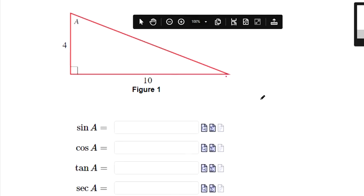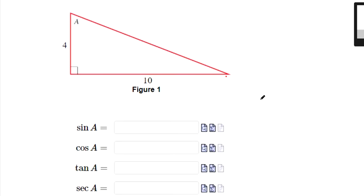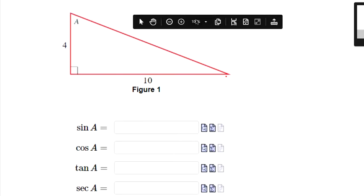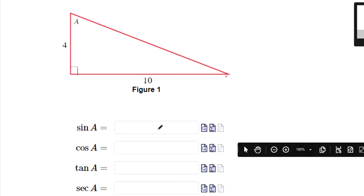Instructions are gone, but we're asked to find the six trigonometric function values for A. And that's important that they say A because these values would all be different if we look from this angle's perspective.